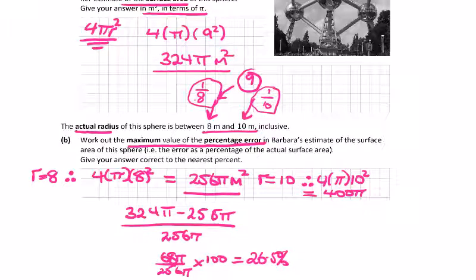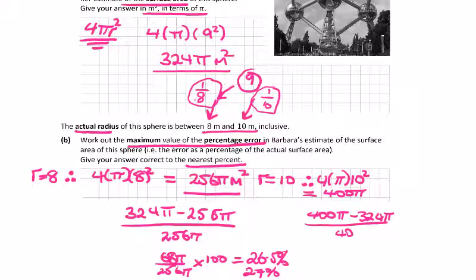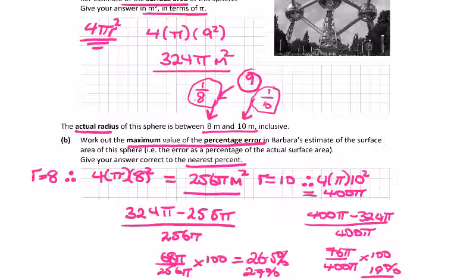And this one, the error is 400. She got 324. Over it was actually 400, her error will be 76π over 400π times 100. This will give an error of around 19 percent. So the question is the maximum value of the percentage error: this one here, 27 percent.